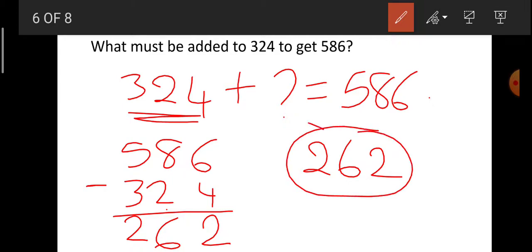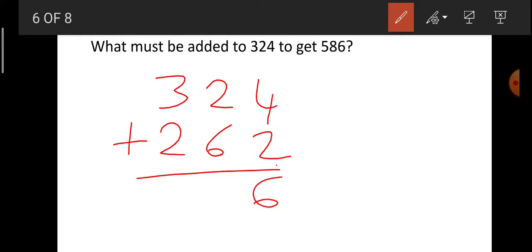Okay, now I will keep this number in its place, in the question mark place. When I add 324 and 262, I need to get the answer as 586. See, 262. Now you got 324 plus 262. 4 plus 2 is how much? 6. 6 plus 2 is how much? 8. 3 plus 2 is how much? 5. Did you get the answer 586? I think you have understood this.